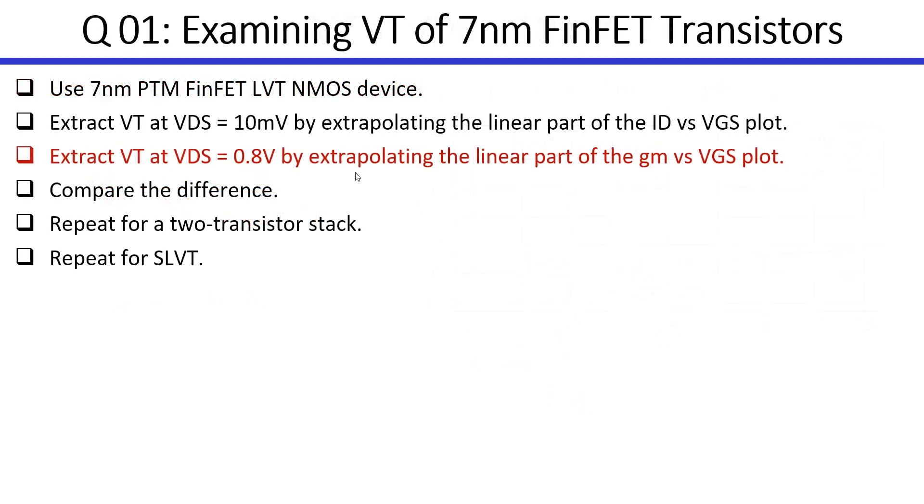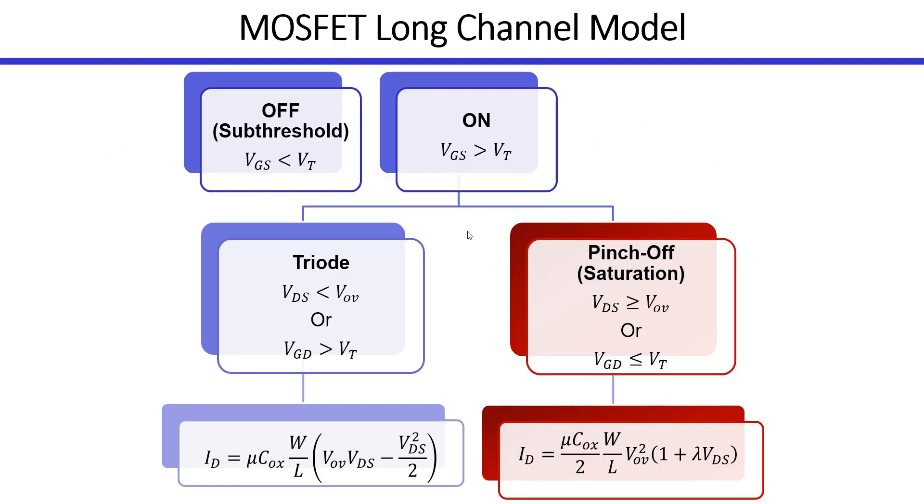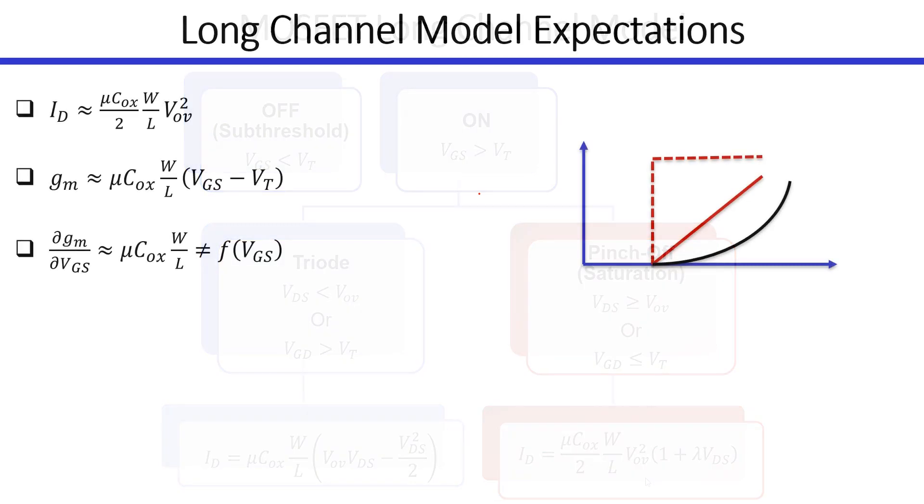So let's go to the second part. We will extract VT, but this time at a VDS of 0.8 volts. If we revisit the long channel model, since VDS is quite large, we will be operating in the saturation region, which is given by this simplified quadratic relation. So this is the famous square law.